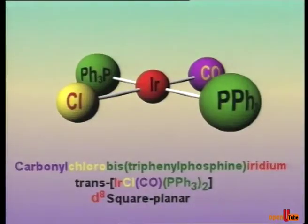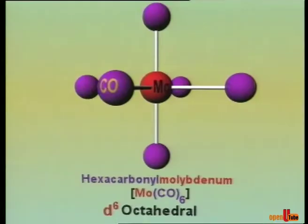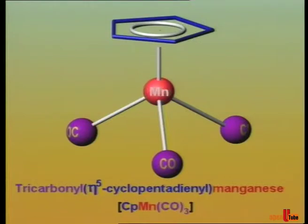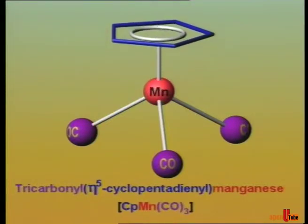Here are some examples of organometallic compounds. The properties of organometallic compounds depend on the metal atom and the nature of coordinated ligands.